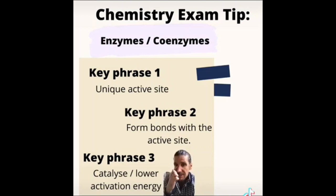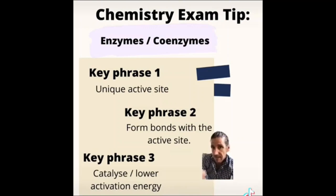Your third key phrase when discussing anything about enzymes or coenzymes is the fact that what they do is they catalyze reactions, which means they lower the activation energy. So that's it. If you see a question about enzymes, remember the active site, bonds forming with the active site and the fact that we have a lower activation energy because of that.